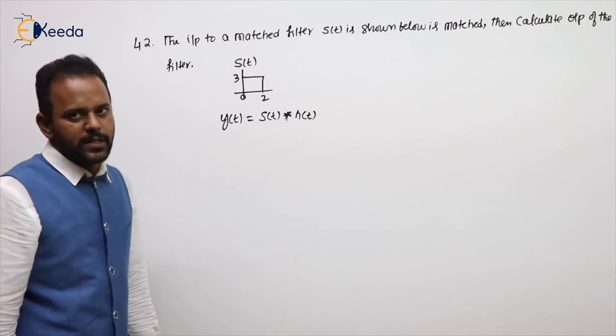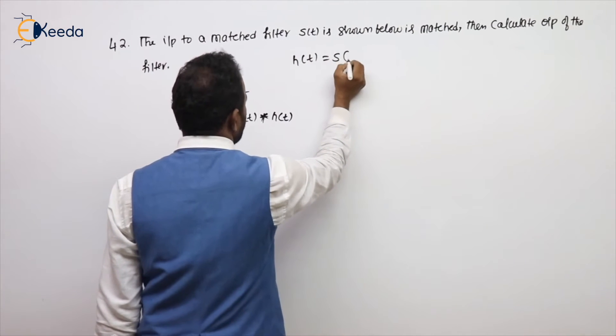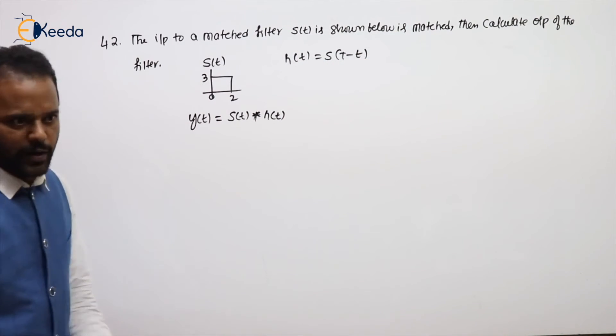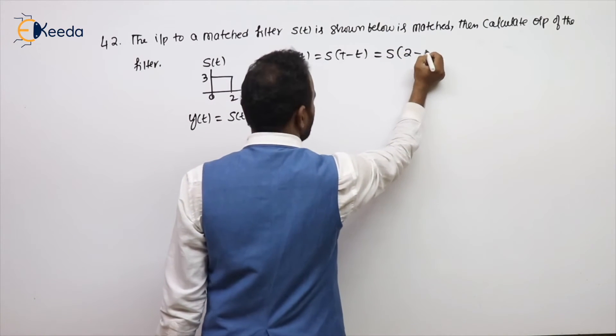But here, don't think that impulse response is not given, because impulse response is nothing but S of capital T minus T, actually conjugate, but it is a real value signal only. Capital T is called duration of the S of T, which is given for 2 seconds.